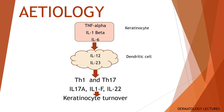The initiation of the psoriatic process causes the release of TNF-alpha, interleukin-1-beta and interleukin-6 from the keratinocytes, which act on dendritic cells to release interleukin-12 and interleukin-23, which trigger the Th1 and Th17 immune systems respectively, and innate immune system cells to release interleukin-17a, interleukin-1f and interleukin-22. These cytokines in turn initiate keratinocyte turnover. The genetics are complex and several different psoriasis susceptibility genes have been identified. The risk of a child developing psoriasis if both parents are affected is 41%, and if one parent is affected is 14%.